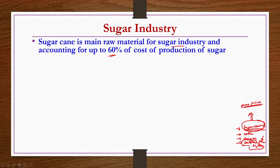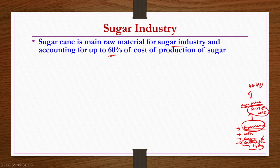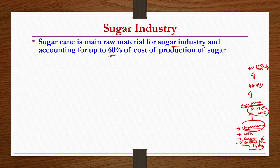Whatever juice is obtained from the sugarcane after purification still has 80 to 85 percent water. That water content is further reduced to 40 to 45 percent by evaporation using multiple effect evaporators. Then vacuum pan crystallizers are used to form the crystals. So the sugar production process is essentially: extraction of juice from sugarcane, purification, concentration, and crystallization to obtain the required sugar.